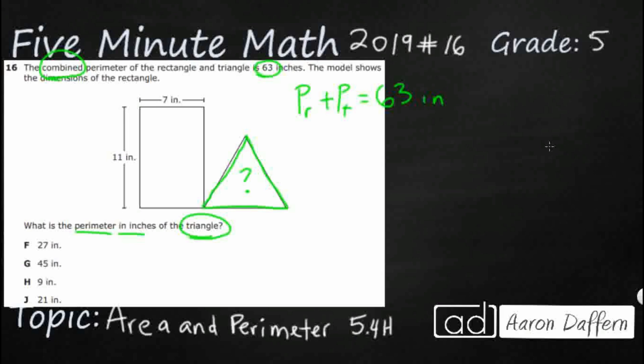I've got no clue on the triangle, which is what we're looking for, right? We're looking for the perimeter in inches of the triangle. So let's see if we can figure this out first, the perimeter of the rectangle.